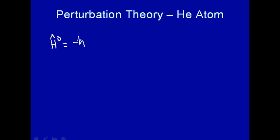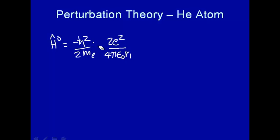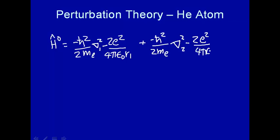The unperturbed Hamiltonian H0 equals minus ℏ² over 2 times the mass of the electron times del-squared — we'll assume the nucleus is not moving — and then we have the electrostatic term: 2e² over 4πε₀R1. That factor of 2 comes from the charge on the helium nucleus being +2. This part depends only on the coordinates of electron 1. Then we have a second electron term: minus ℏ²/2m times del₂² minus 2e²/(4πε₀R2). That's our unperturbed Hamiltonian.